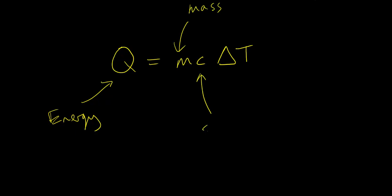Specific heat capacity is used in the equation Q equals MC delta T, where Q is the energy, heat energy, M is the mass, C is the specific heat capacity, and delta T is the change in temperature.